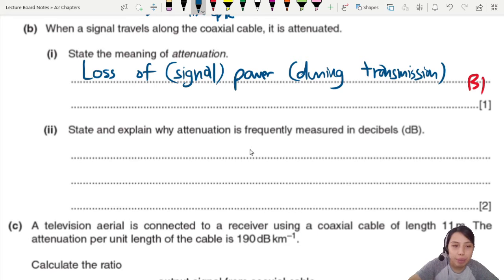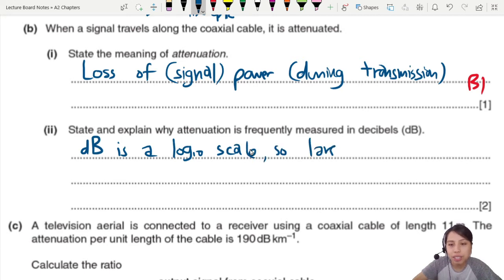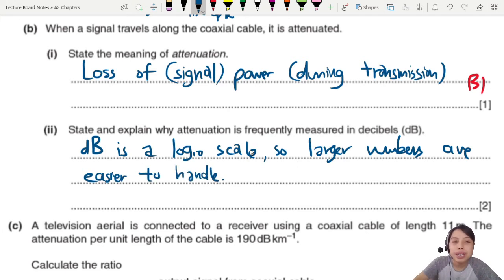So we can talk about our benefits that we mentioned earlier in the theory video explaining the dB. So we say dB is based on the log scale, log 10 to be precise. So what does that do? So larger numbers are easier to handle. So if you say my signal become 10,000 times stronger. That's a lot of zeros to write if you have to write it all the time.